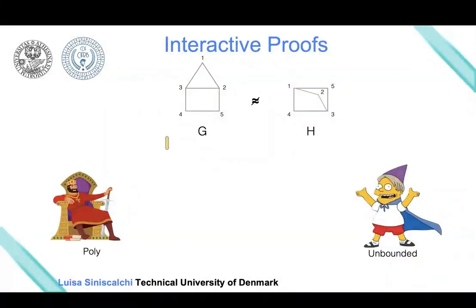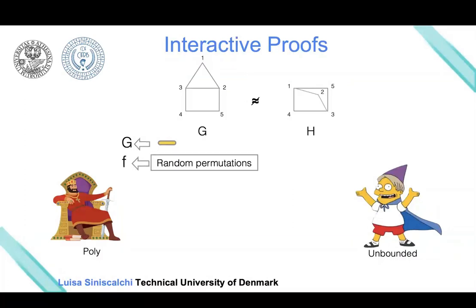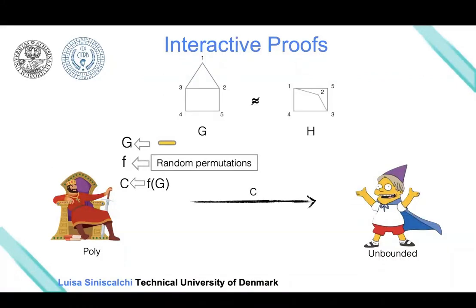Both G and H are known to both the prover and the verifier. What the verifier can do is choose one of the two graphs at random. Say he chooses graph G. He will also pick a random permutation, apply it to G, and send the resulting graph C to the prover.